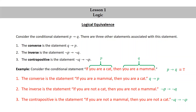Notice that the conditional statement is true — if you are a cat, then in fact you are a mammal. The converse, however, is false: if you are a mammal, you're not necessarily a cat — for example, a dog is a mammal. The inverse is also false: if you are not a cat, for example maybe a dog, then you could be a mammal. And the contrapositive is true: if you are not a mammal, then you are certainly not a cat. In fact, the conditional statement is always logically equivalent to its contrapositive.